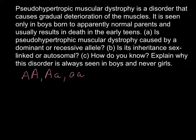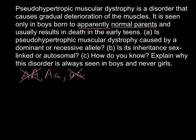We are told that both parents are normal. That means we can exclude the homozygous dominant condition, because if the disease were dominant, one of the parents would show the disease. We can also exclude homozygous recessive, because such a parent would also express the disease. What we are left with is the heterozygous form, and from the first glance, this could be our answer.